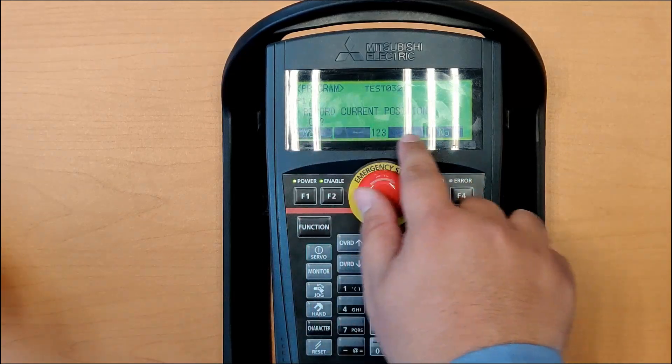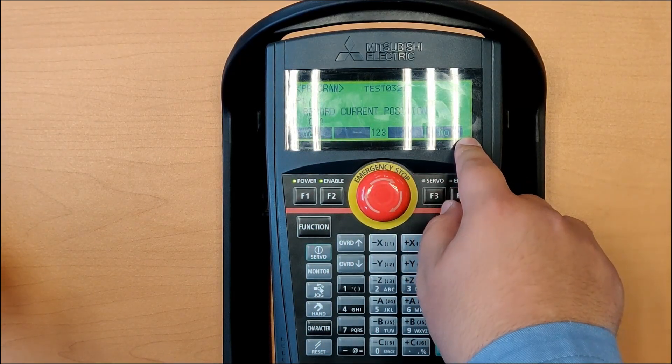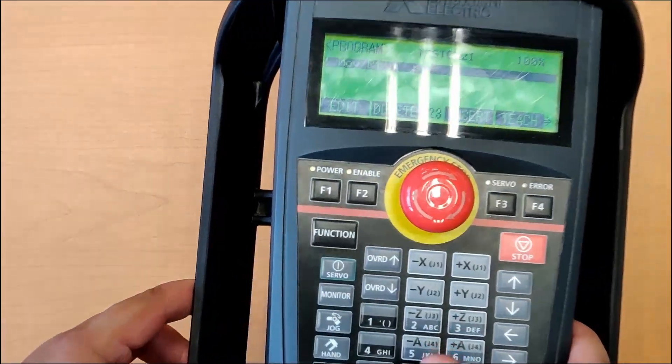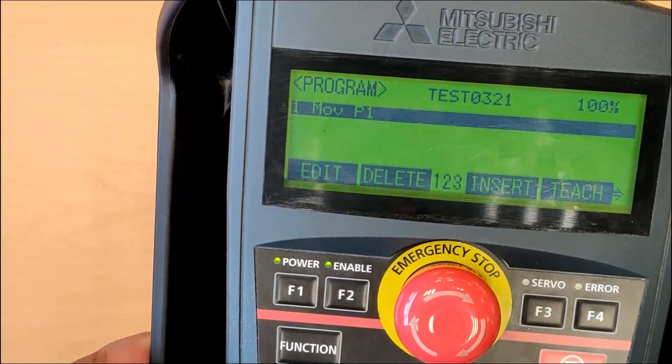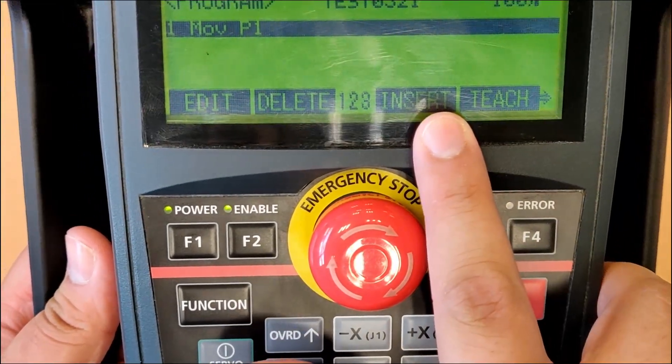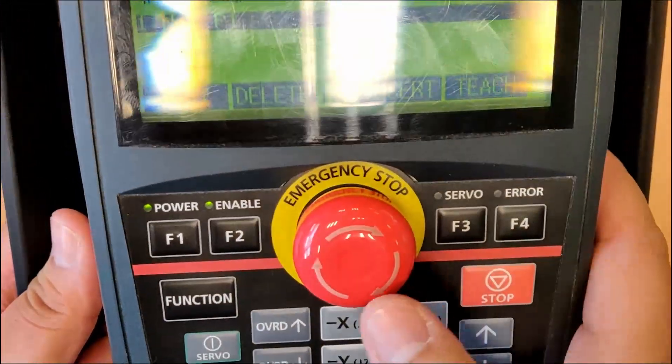What we have to do is to teach the position to the robot. Here it says record the current position. We are going to click yes. With that, we have the first position recorded.